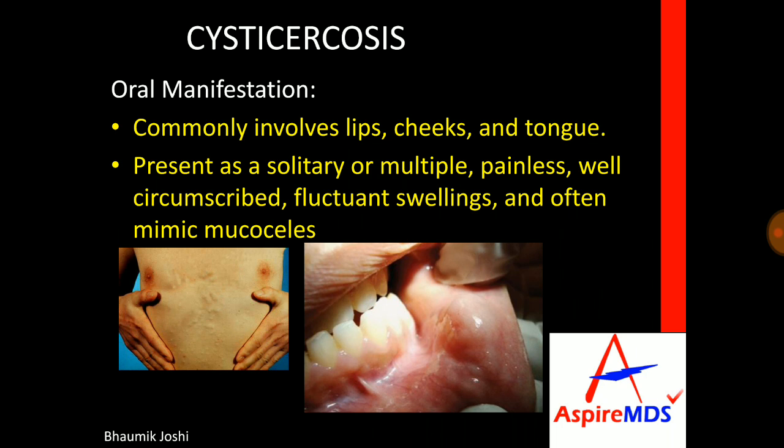Cysticercosis in general manifests as solitary or multiple, painless, well-circumscribed fluctuant swellings. In the oral cavity they mainly present on the lips, cheeks, and tongue, and often mimic a mucocele.